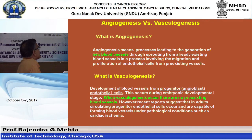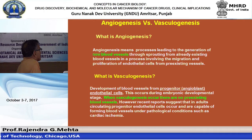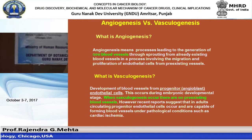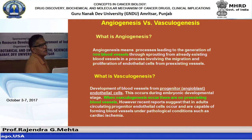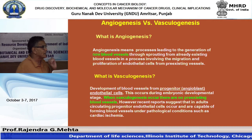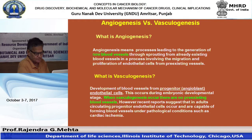Angiogenesis is defined as the generation of new blood vessels through sprouting from pre-existing blood vessels, involving migration and proliferation of endothelial cells. Two terms to remember: angiogenesis and vasculogenesis. Vasculogenesis involves blood vessel growth with no pre-existing vessels, while angiogenesis branches from existing vessels. We'll focus on angiogenesis - new blood vessel formation from existing vessels.